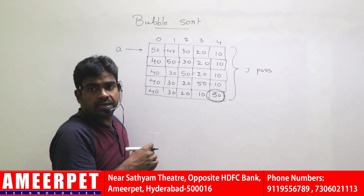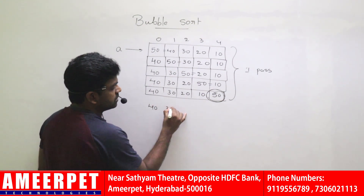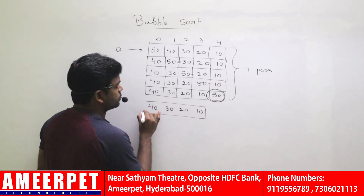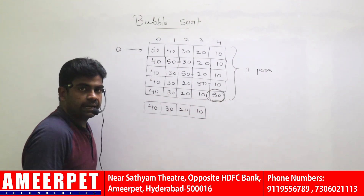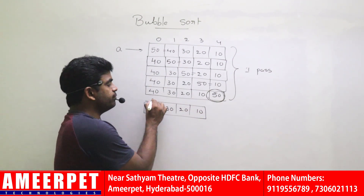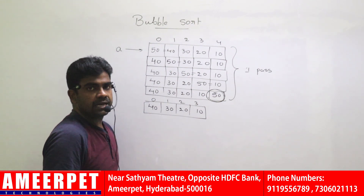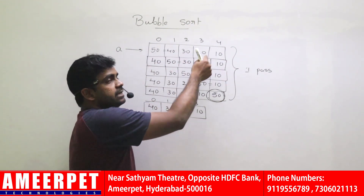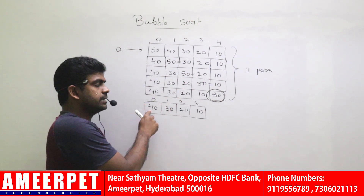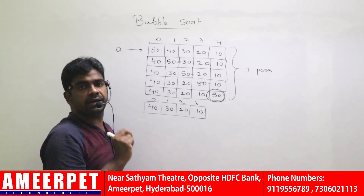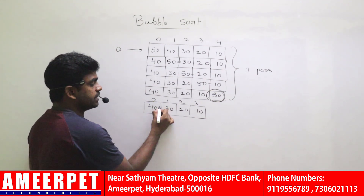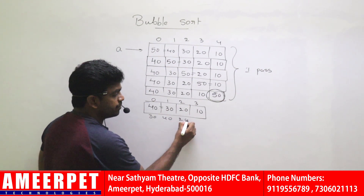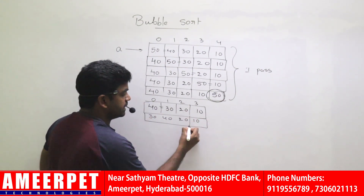Now the remaining elements are 40, 30, 20, 10. One element is already sorted, so no need to compare it again — only four elements remain. If four elements are there, three comparisons are required. 40 and 30 compare, values become 30 and 40. Then 40 and 20 compare, values become 20 and 40, with 10 next.